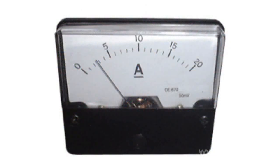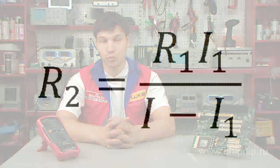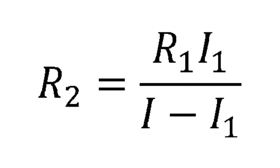The required shunt resistance is calculated by the formula: R2 equals R1 multiplied by I1, divided by I minus I1. Where R2 is shunt resistance, R1 is the resistance of the ammeter, I is the maximum current that will correspond to the full deflection of the needle of the device, and I1 is the rated maximum current measured by the ammeter without the shunt.